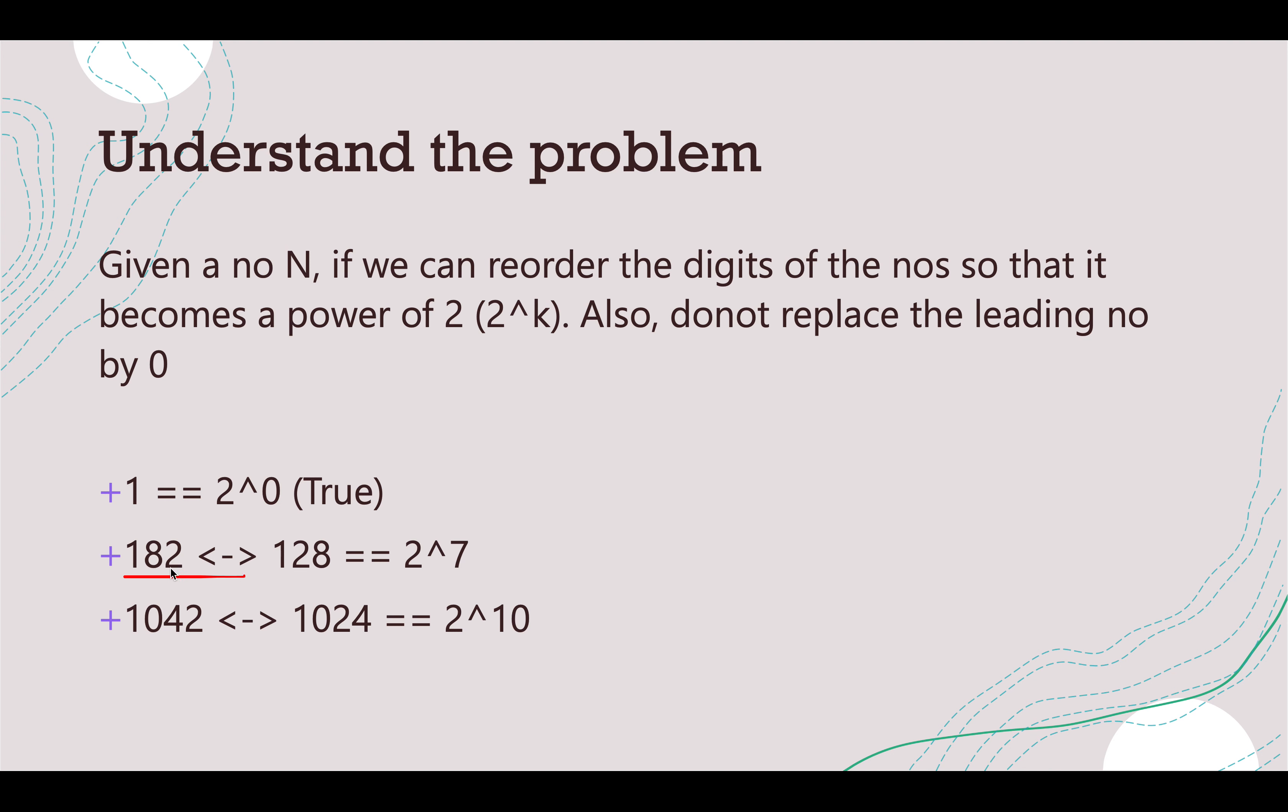Let's take 182 as the given input number. What are the permutations that can be generated of all the digits in 182? The first one is 128, 182, 218, 281, 821, and 812. If any of these numbers is a power of 2 then we have to return true, otherwise we need to return false, which in this case is 128. 128 is 2 raised to power 7, therefore the answer would be true here.